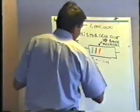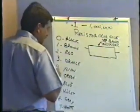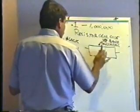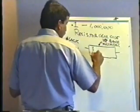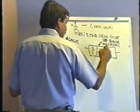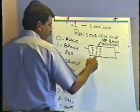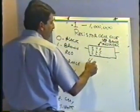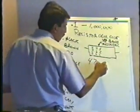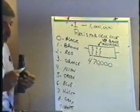Let's do a couple more. Let's say we have one that is yellow, violet, yellow. Yellow is 4, violet is 7, and yellow as the third band means four zeros: one, two, three, four — 470,000 ohms.